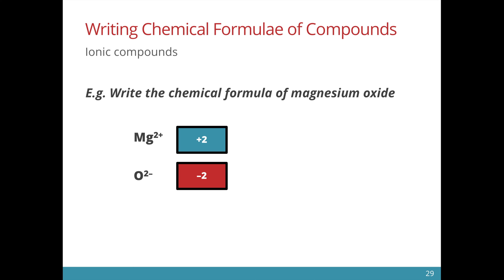So we have one magnesium ion and one oxide ion. Together they form a neutral ionic compound.